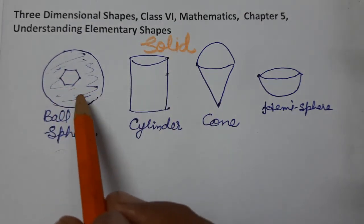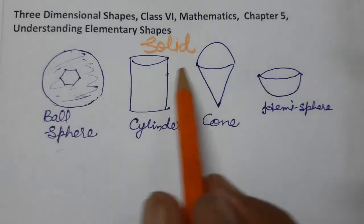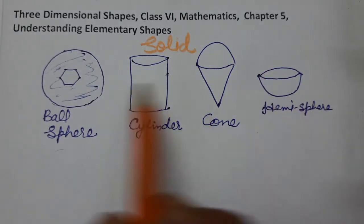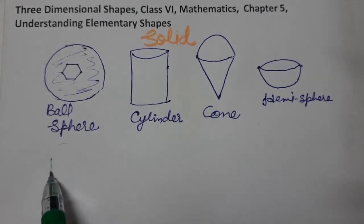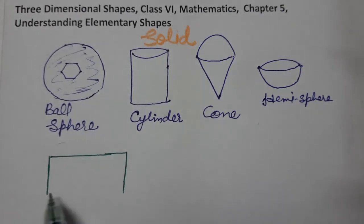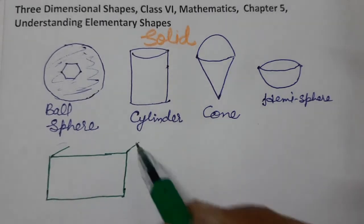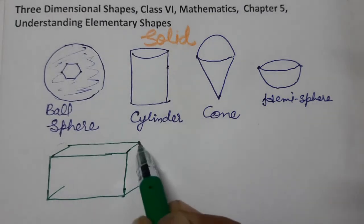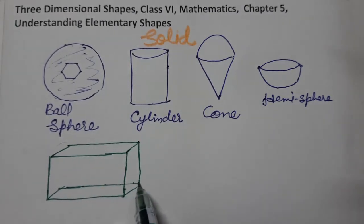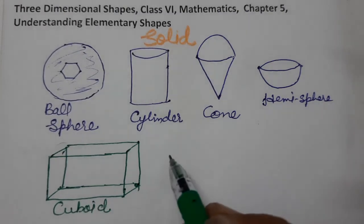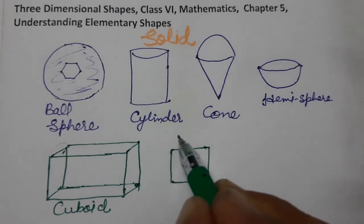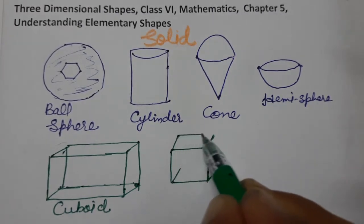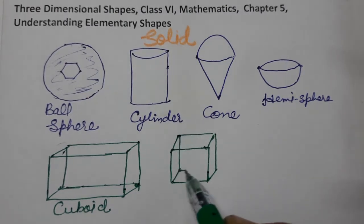These are all solid shapes — not flat shapes. None of them are flat. Just like cube and cuboid, which we are going to study — these curved shapes are not flat. Now see these shapes: I am going to make a cuboid. This is the shape of a cuboid.